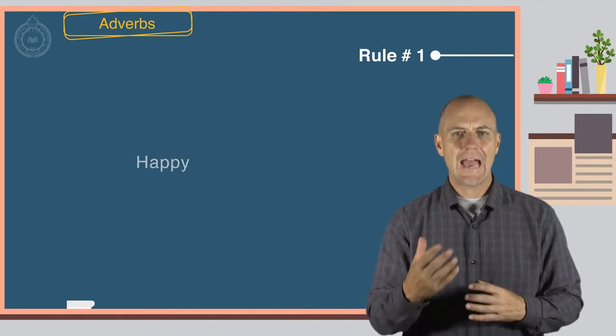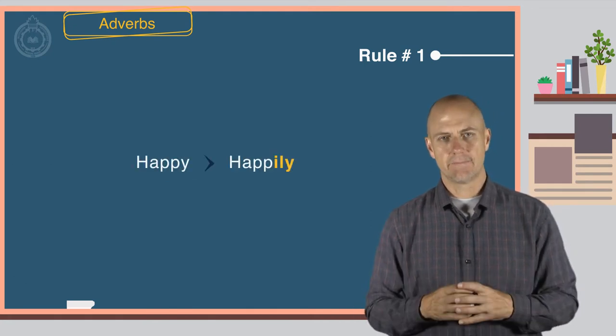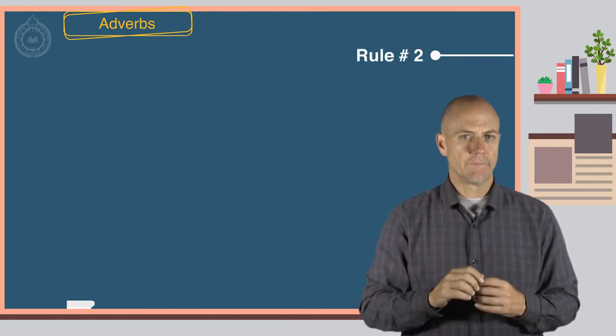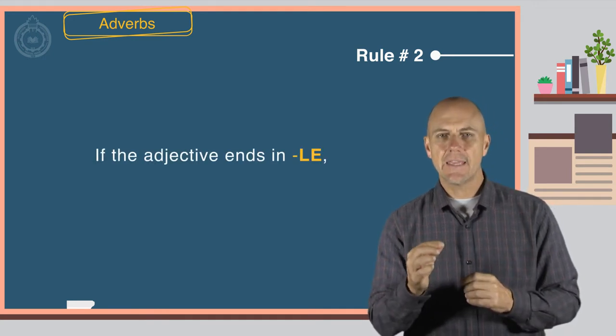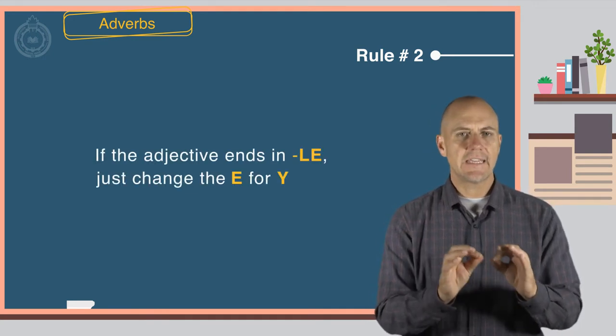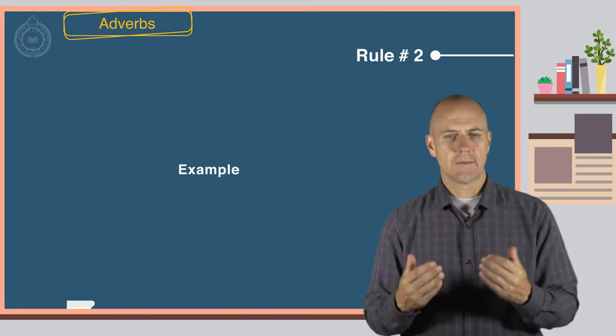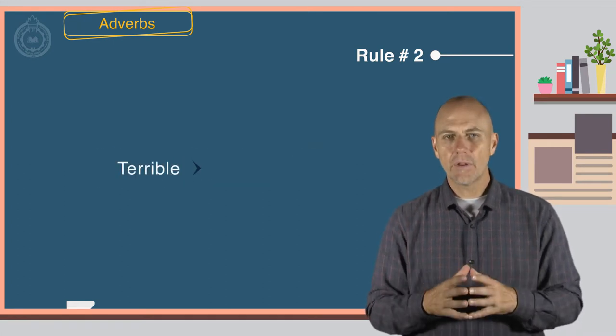For example, happy, happily. Rule number two. If the adjective ends in le, just change the e for y. Example, terrible, terribly.